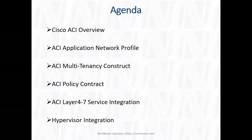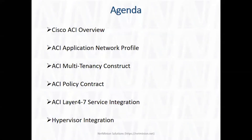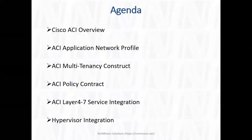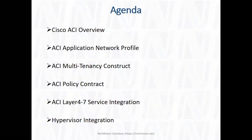Then we'll move into access policy creation — what policies you need to create if you want to connect a server, what policies you need when integrating a load balancer or firewall already in your network. After that we'll cover Layer 2 out connectivity. For example, if you have VLANs in the 7K where gateways are in the 7K but servers are connected in the fabric, or vice versa — we'll cover both scenarios and the best configurations to make communication possible.